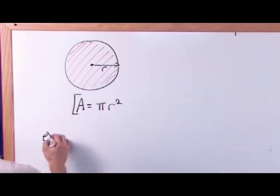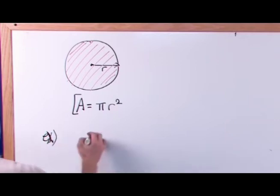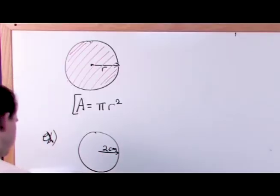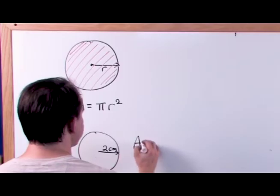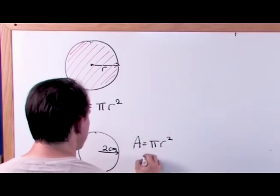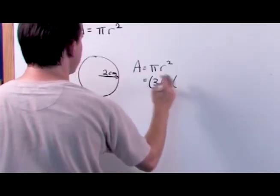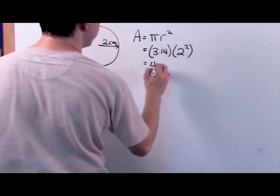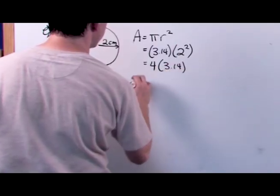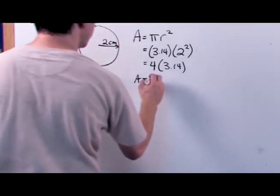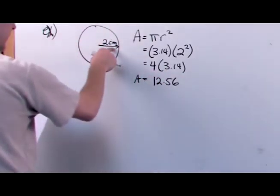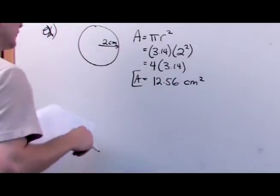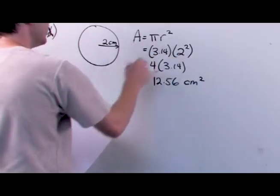As an example, you have a circle and the radius is 2 centimeters. The area is equal to pi r squared, which is 3.14 times 2 squared. 2 times 2 is 4, and 4 times 3.14 gives us 12.56. So the area is 12.56 centimeters squared, because units of area always have square terms.